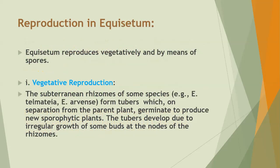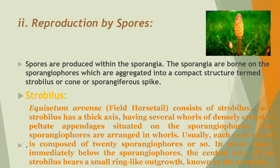Equisetum reproduces vegetatively and by means of spores. Vegetative reproduction takes place by the subterranean rhizome; some species like Equisetum telmateia and E. arvense form tubers which, on separation from the parent plant, germinate to produce new sporophytic plants. Tubers develop due to irregular growth of some buds at the nodes of the rhizome. Mainly, reproduction takes place by spores, which are produced within sporangia. Sporangia are borne on the sporangiophore — a stalk-like structure — which are aggregated into a compact structure called the strobilus or cone.